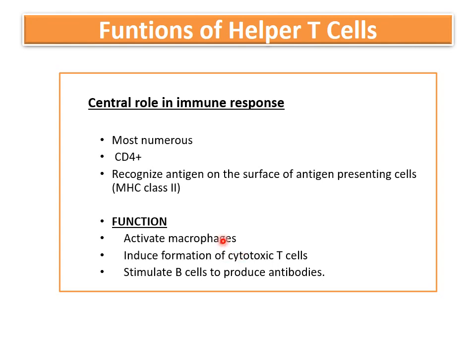The second function is they induce the formation of cytotoxic T cells, which are the attackers of cell mediated immunity, while they also stimulate B cells and stimulate the production of antibodies. It is obvious from these functions that helper T cells play an important role in humoral immunity, cell mediated immunity, and innate immunity. You can say that they play a central role in the immune response.